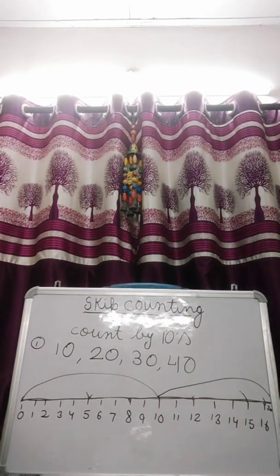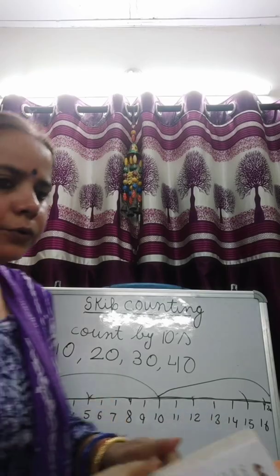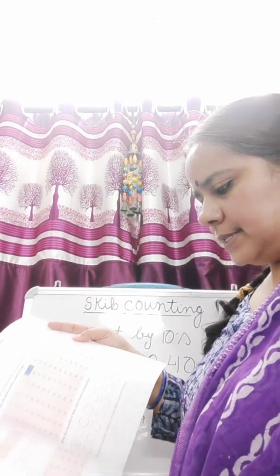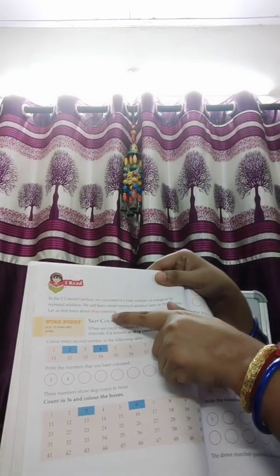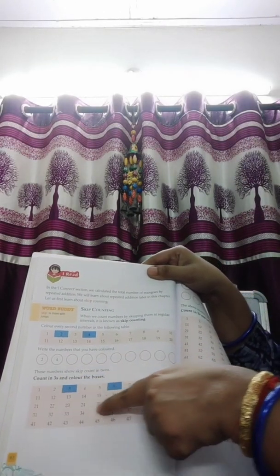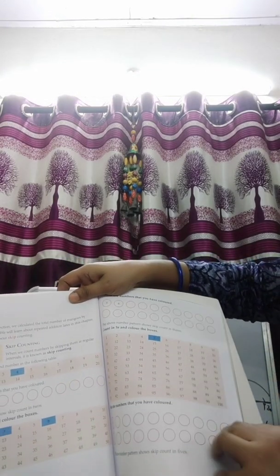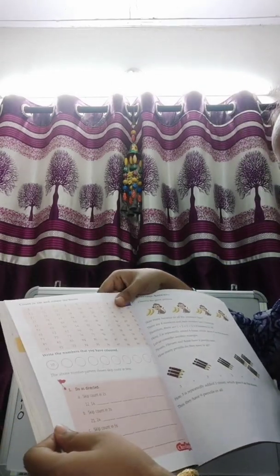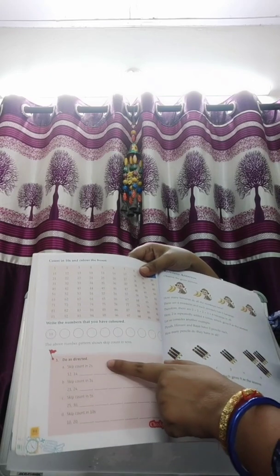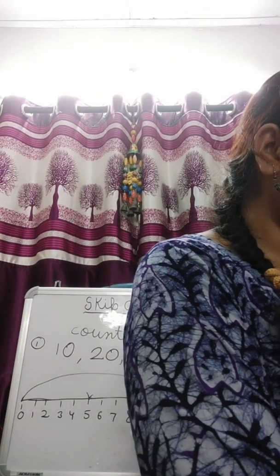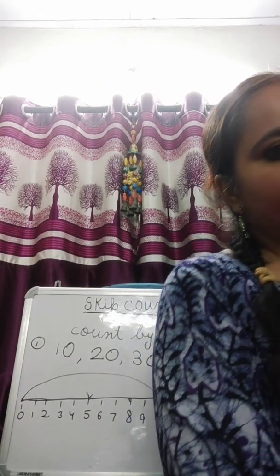Okay children, and what will be your homework? In your course book, you have to do: count every second number, count every third number, count every fifth number — page number ninety-two and ninety-three. Page number ninety-four also. And checkpoint one also you have to do. All these things my children have to do in their course book.